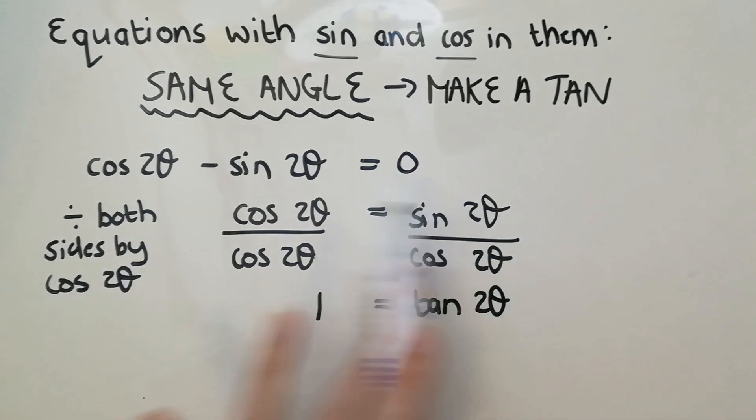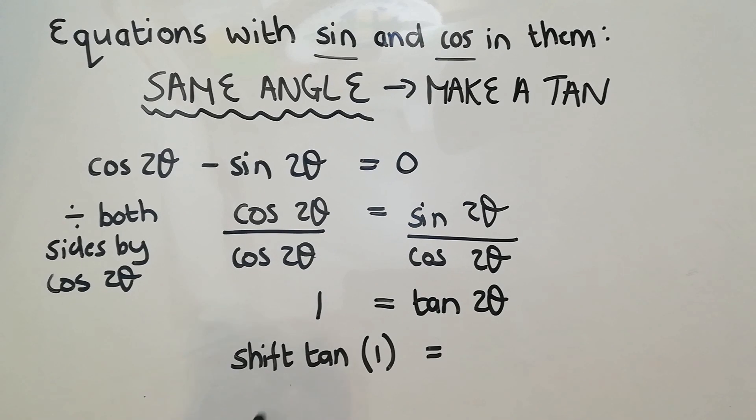Once you've gotten past this initial bit, it's really easy from here because this is just a normal trig equation. We will go to general solution and then if there's specific requirements given, which I'll deal with later, then we will go to specific answers. What I've got now is 1 equals tan 2θ. So what I'm going to do is I'm going to shift the tan and get an answer for 2θ. What I get then, if I shift the one, is I get 45 degrees.